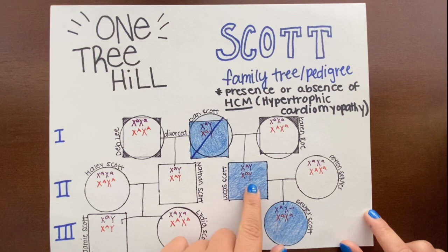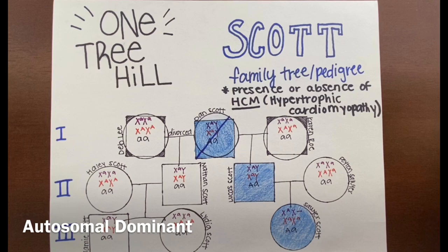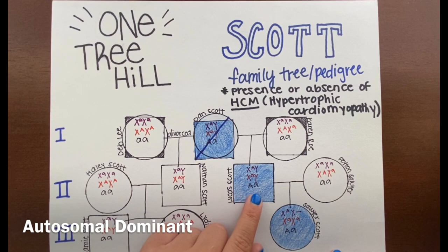Next, I tested autosomal dominant, filling in the genotypes for those who did not have the phenotype as little a, little a, and those who did have the phenotype had to have at least one big A. We know that Dan had to have another little a because he donated one to his son. And we know that Lucas also had to have a little a because he donated one to his daughter.